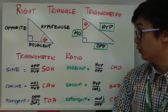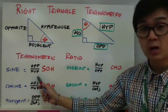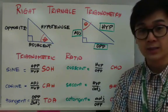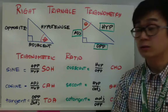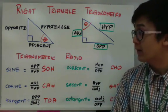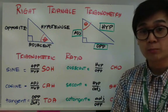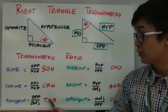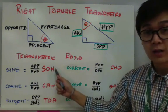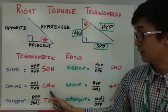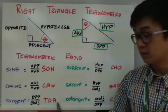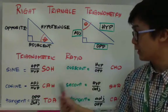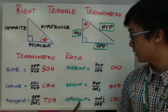So ano ba yung mga trigonometric ratio? Yung mga trig ratio: for sine, we have opposite over hypotenuse; for cosine, we have adjacent over hypotenuse; and yung tangent is opposite over adjacent. Kailangan natin malaman itong mga ratio na ito kasi ito yung mga formula na kailangan nyong matandaan kapag nagso-solve tayo ng mga trigonometric problem involving right triangle. Ang mnemonic device na gagamitin natin is SOHCAHTOA — sine is opposite over hypotenuse, cosine is adjacent over hypotenuse, at tangent is opposite over adjacent. At ito naman yung mga inverse niya: inverse ng sine is cosecant, inverse ng cosine is secant, and inverse ng tangent is cotangent.